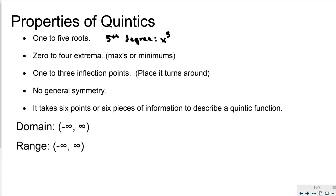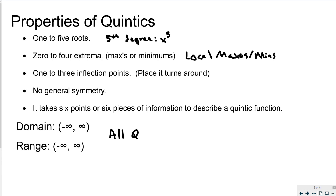It has 0 to 4 extrema — we're talking about local maxes and mins. And it has 1 to 3 inflection points, places where it's going to turn around. It has no general symmetry. And it takes 6 points and 6 pieces of information to properly and accurately describe a Quintic function. The domain and range of all Quintic functions, barring very few, would be negative infinity to infinity. These graphs go on forever in both directions.